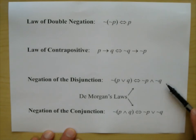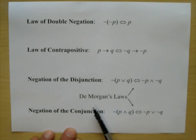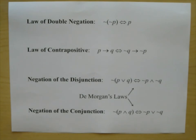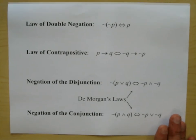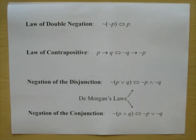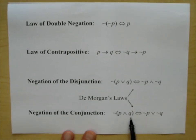De Morgan was a person who studied this. Similarly, for the conjunction: negation of (P and Q) equals not-P or not-Q. To remember it: negate each of the three parts — negation of P, negation of AND becomes OR, negation of Q.